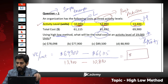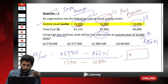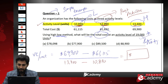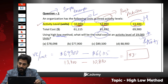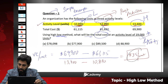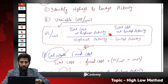Calculating: 69,900 minus 61,115 divided by 13,400 minus 10,890 gives us $3.50 per unit. This is the variable cost per unit. Step two is complete.